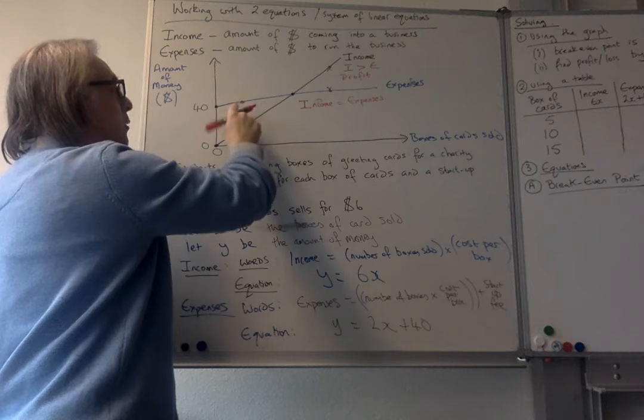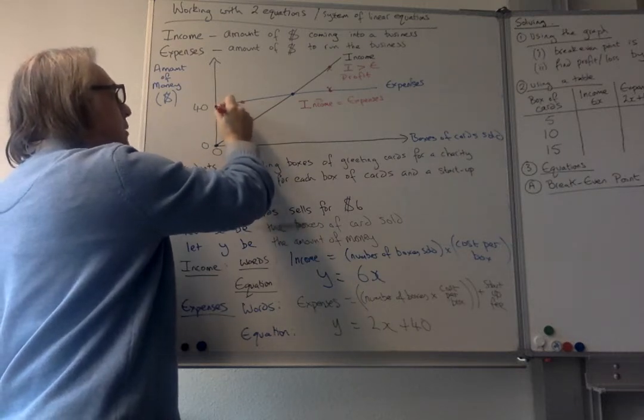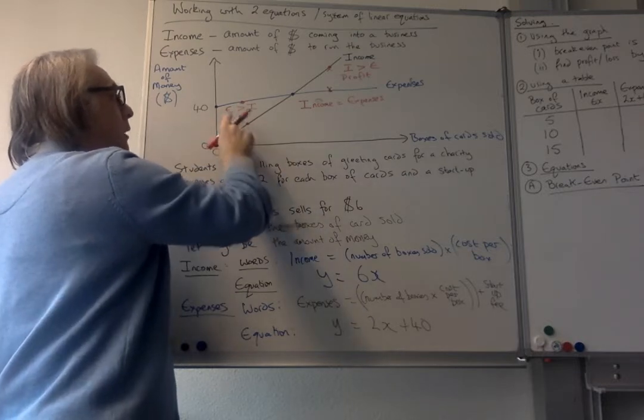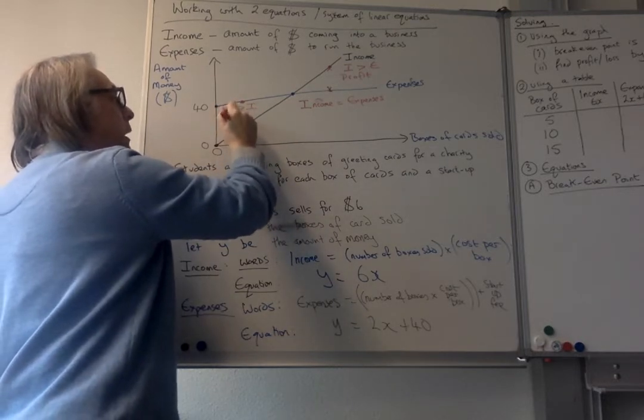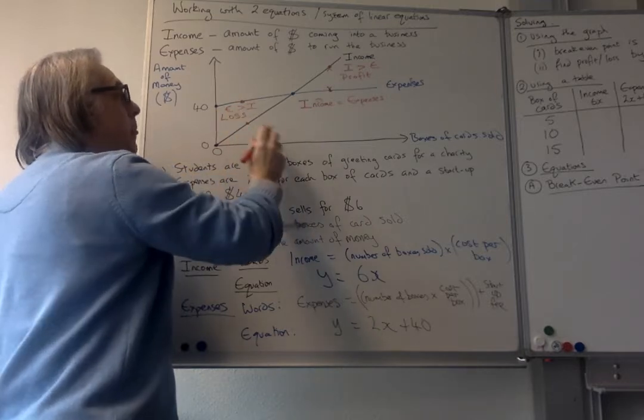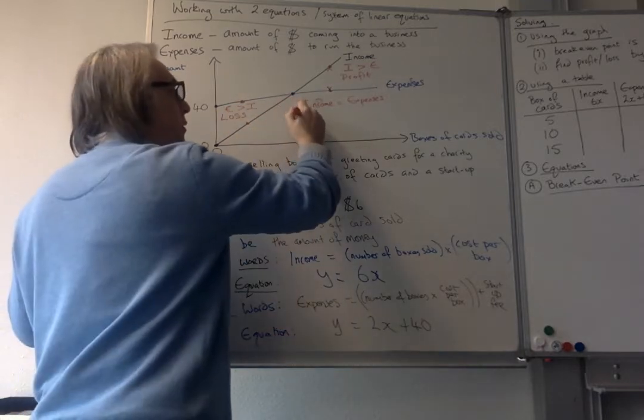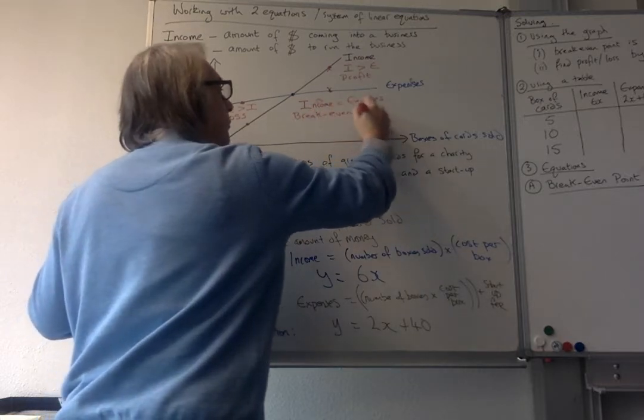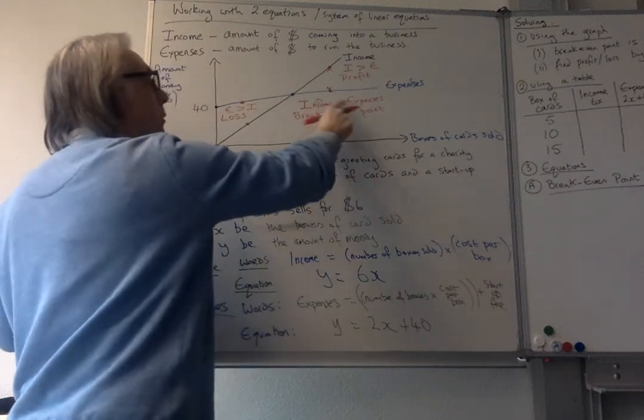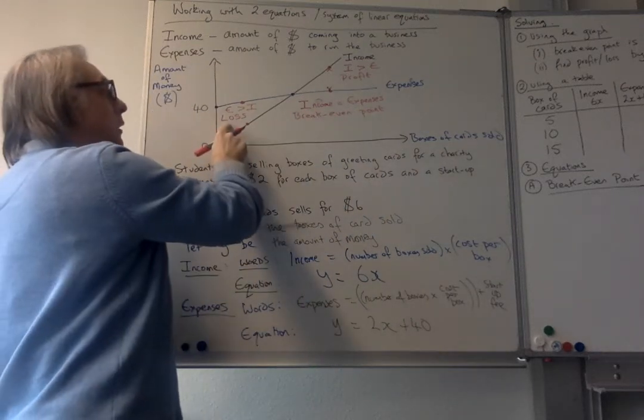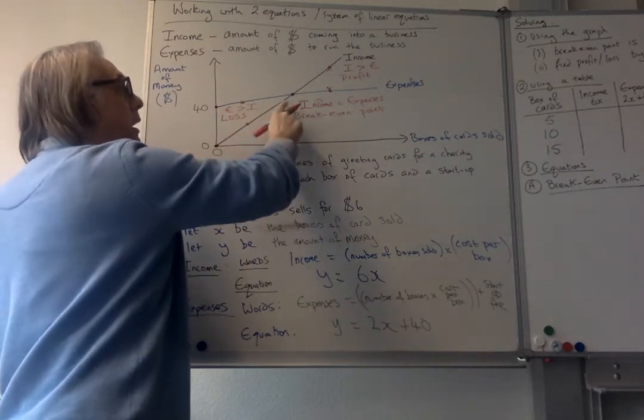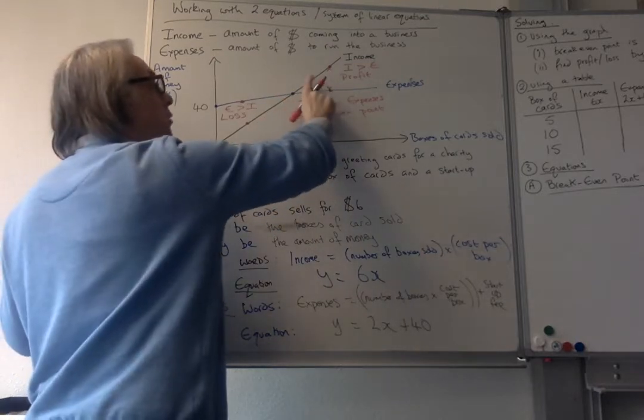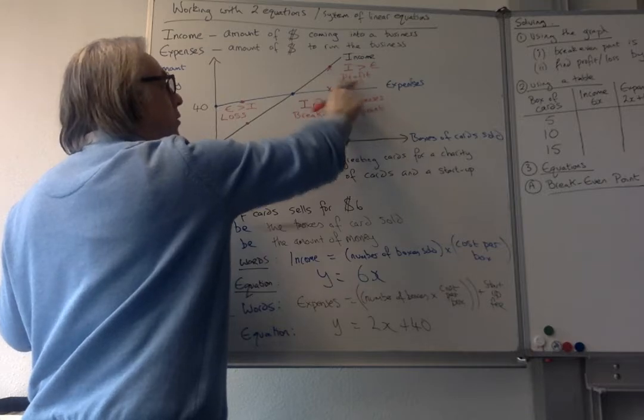But if I look equally over here, I can see at this point the expenses are greater than the income. And if that's happening in your company, there's more money going out than coming in. That means you're making a loss. This then becomes known as the break even point where the income and the expense are the same. So here you're making a loss in this part of the graph. Here you're making no profit, no loss to the break even point. And on this side is where you really want your business to be because you want to be making a profit.